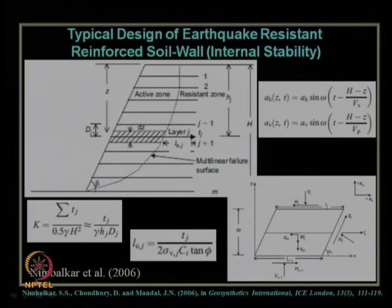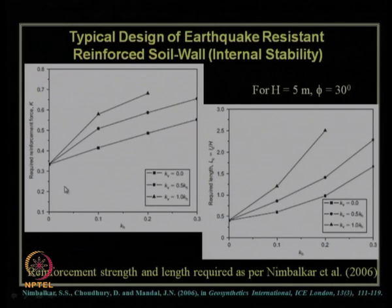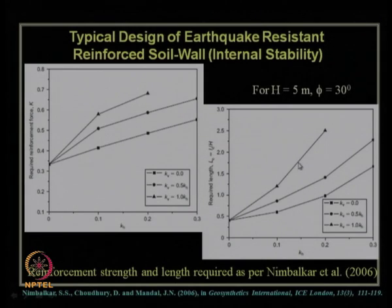This analysis is available in the journal paper by Nimbalkar et al. 2006 (Nimbalkar, Choudhury and Mandel), published in Geosynthetics International by the Institute of Civil Engineers, London. The design charts show how much reinforcement force is required for different values of k_h and k_v, as well as the length of reinforcement required to be provided against pullout failure for particular values of k_h and k_v.